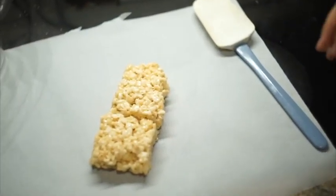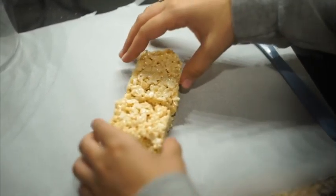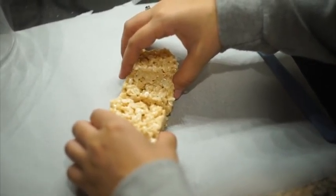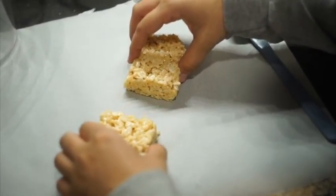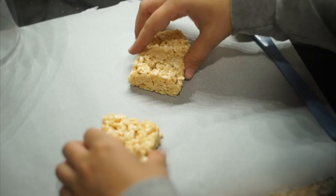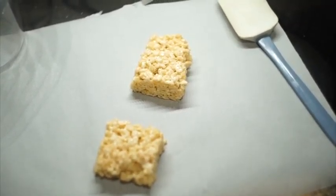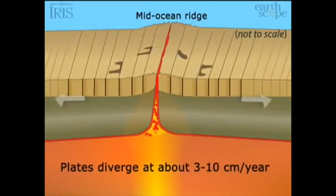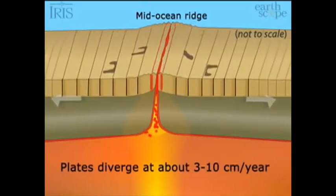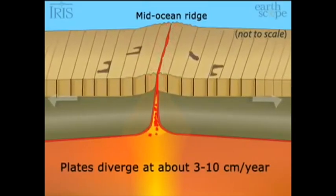This next plate movement is called a divergent boundary. These plates move away from each other and contribute to sea floor spreading as a crack in the ocean's floor appears.